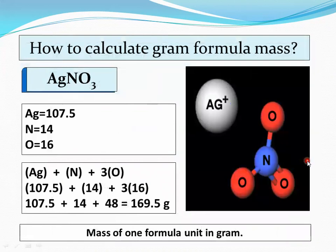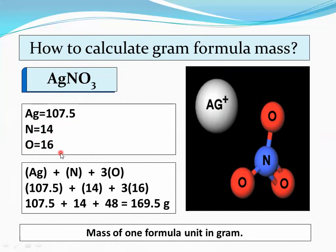How to calculate gram formula mass: same as calculating formula mass. Observe the diagram — one silver, one nitrogen, and three oxygen atoms in silver nitrate AgNO3. Note the masses from the periodic table, place them, substitute grams instead of AMU, and the result becomes the gram formula mass. Mass of one formula unit in grams is known as gram formula mass — 169.5 grams for silver nitrate.